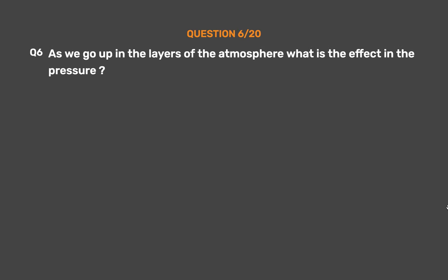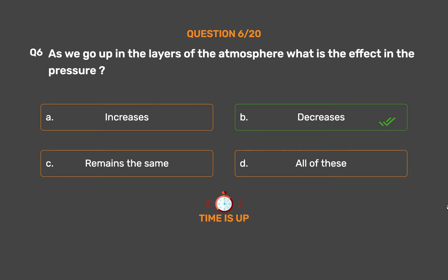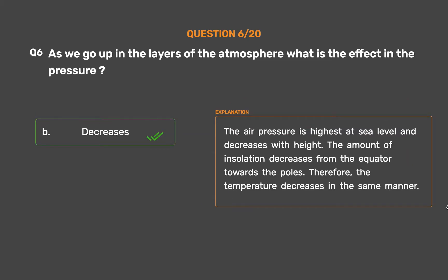Question number 6: As we go up in the layers of the atmosphere, what is the effect on pressure? Option A: Increases. Option B: Decreases. Option C: Remains the same. Option D: All of these. The correct answer is Option B, Decreases. The air pressure is highest at sea level and decreases with height. The amount of insolation decreases from the equator towards the poles; therefore, the temperature decreases in the same manner.